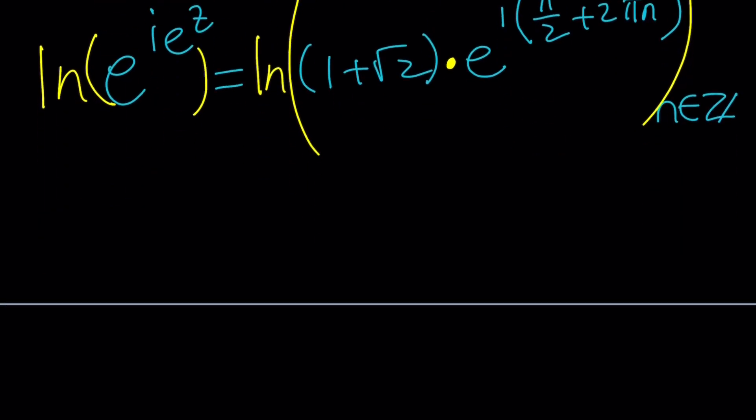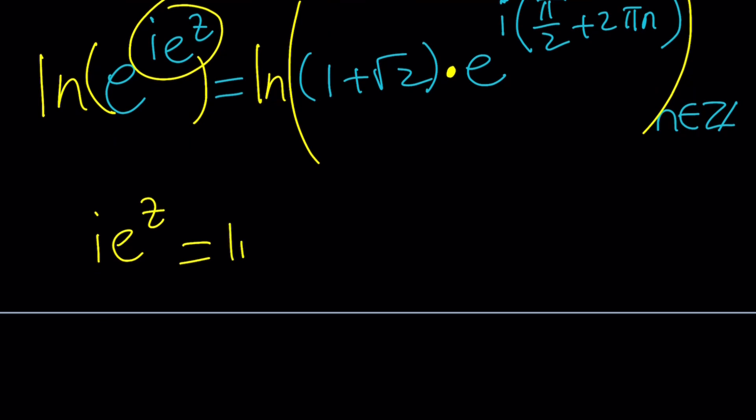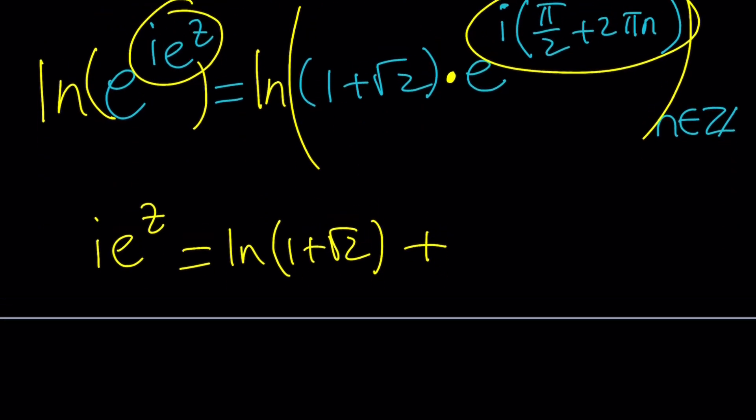Now, this is going to be ie to the z. And then on the right hand side, we're going to get ln 1 plus root 2 plus, when you ln e to the power of something, it's going to be that, because if you log a product, it's going to turn into the sum of two logs. So it's going to be i pi over 2 plus 2 pi n.